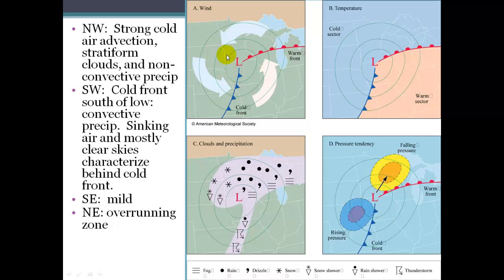So we have cold air advection, all this cold air blowing into the northwest sector of the storm. We're likely to see stratiform-type clouds, so layer-type clouds like stratus and the many different types of stratus clouds. And we may see some precipitation, but non-convective. There's no convection going on here. It's just the stratus, like nimbostratus-type precipitation.